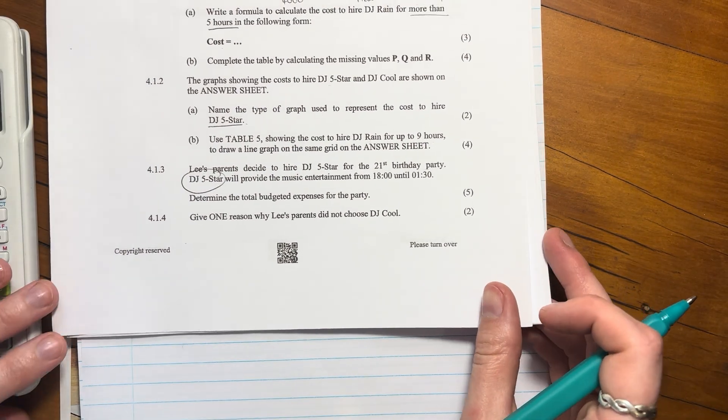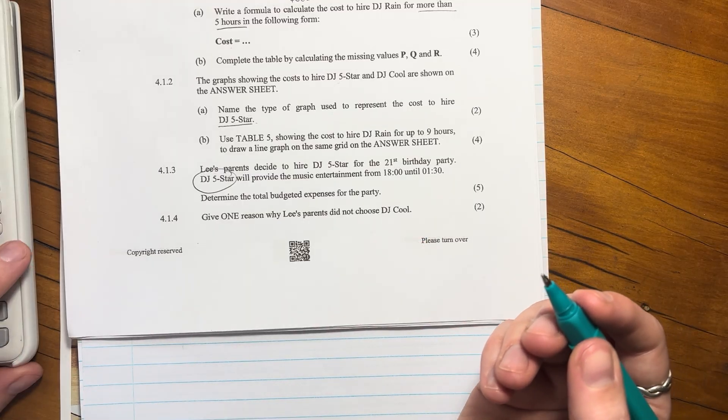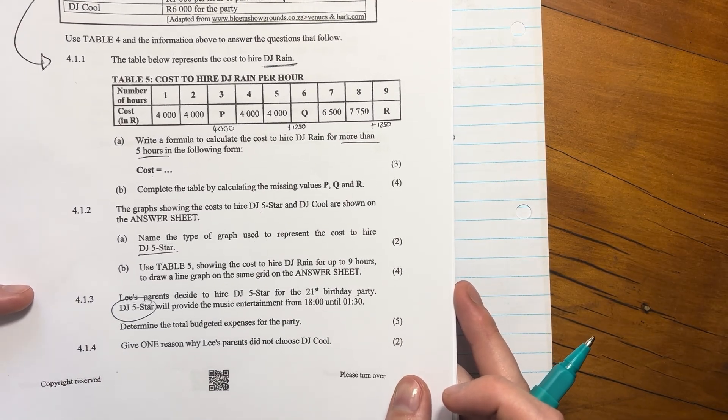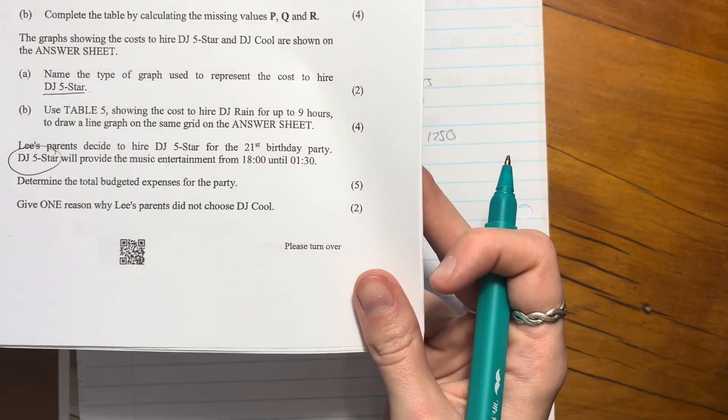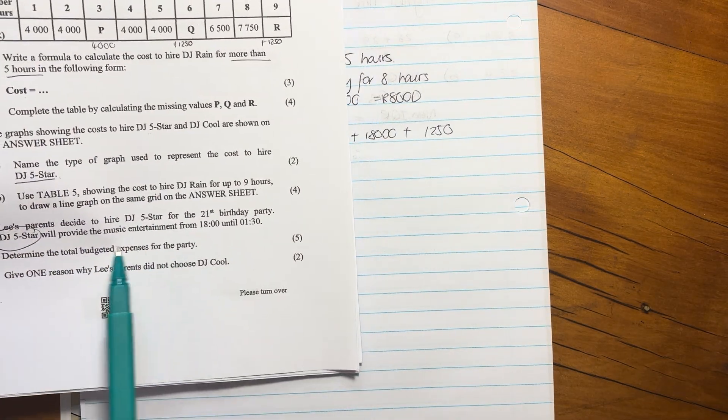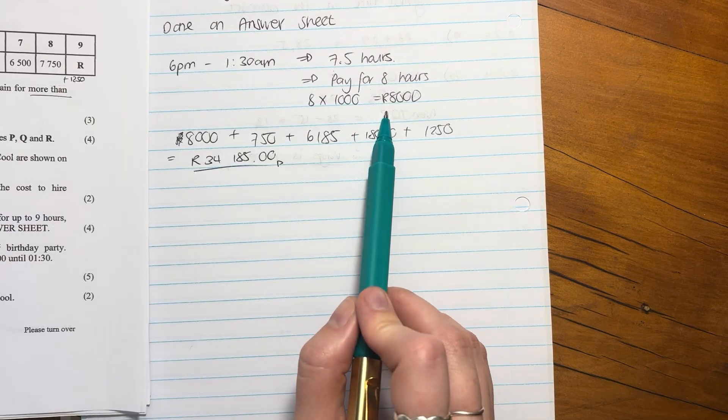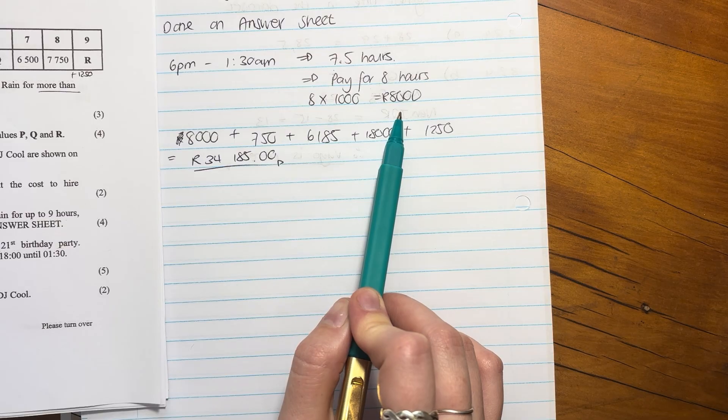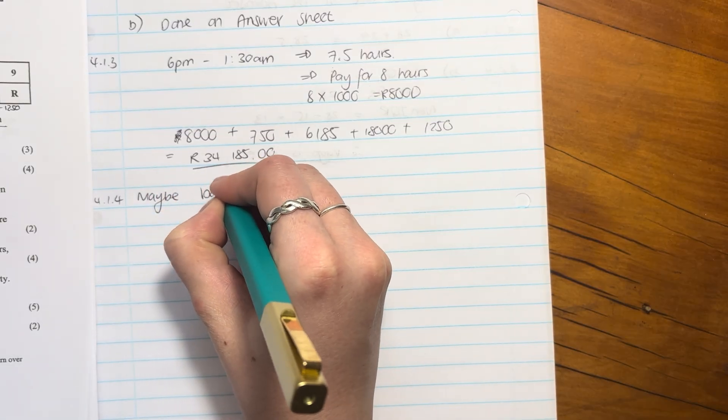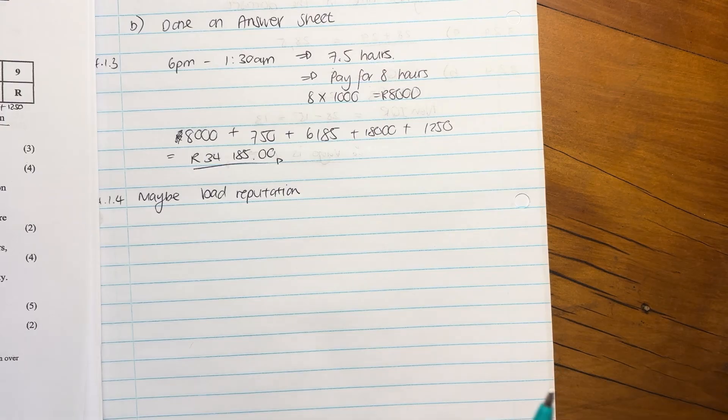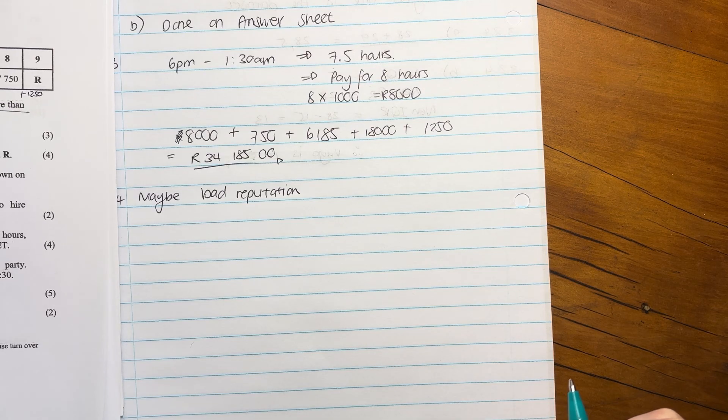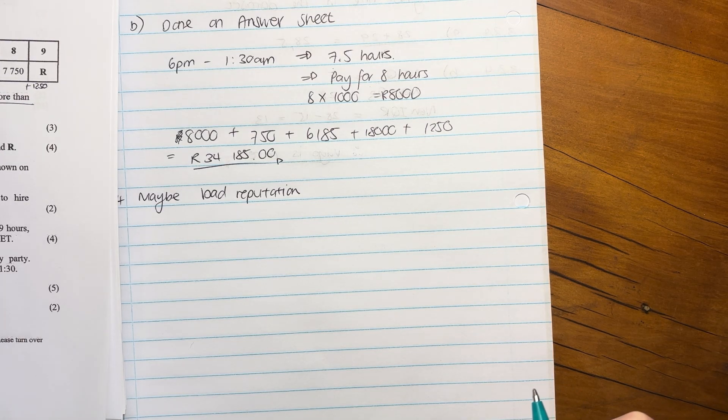Let's do the last question for this video. Give one reason why Lee's parents did not choose DJ Cool. Now there's many reasons they could have not chosen DJ Cool. Maybe they didn't want to pay a flat fee, maybe the DJ had a bad reputation, you can say anything like that. The flat fee for DJ Cool was actually just 6,000 rand, so it was actually cheaper than what we ended up paying for DJ Five Star. So I'd say maybe bad reputation. These sorts of things just kind of do at the top of your head. That is our question done, let's move on to the second half.